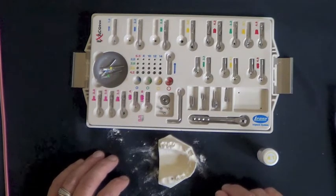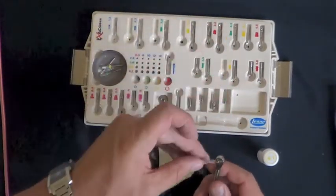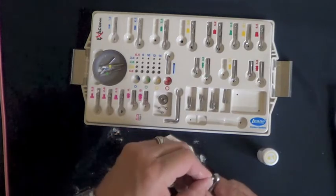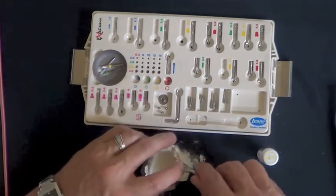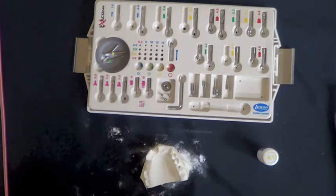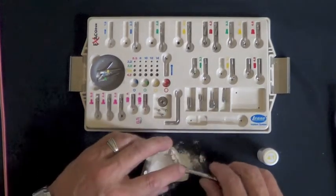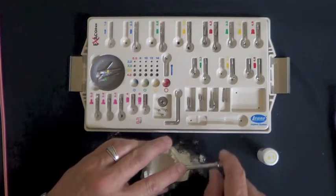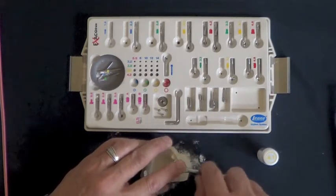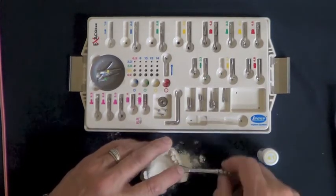Following the osteotomy and the use of the countersink, the next step would be to take the ratchet and the tap and tap the osteotomy site if this was a dense bone profile in that site. So again the tap goes in a clockwise direction, and in this tap scenario would be threading the bone and the tap has to be rotated in and then rotated back out of the osteotomy.